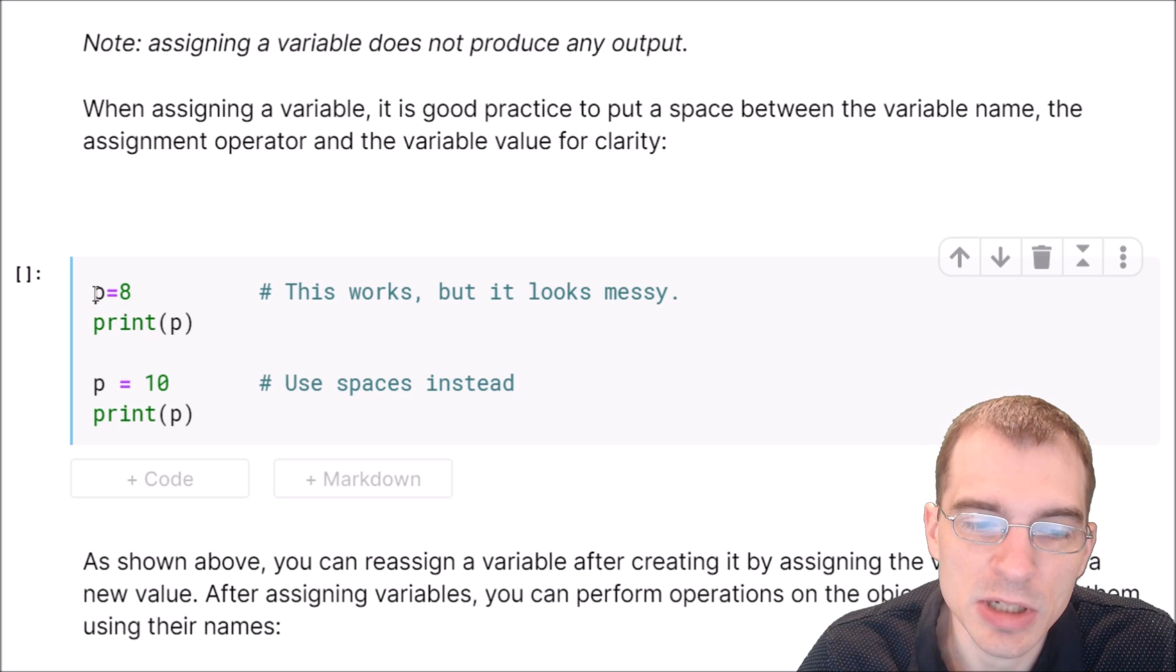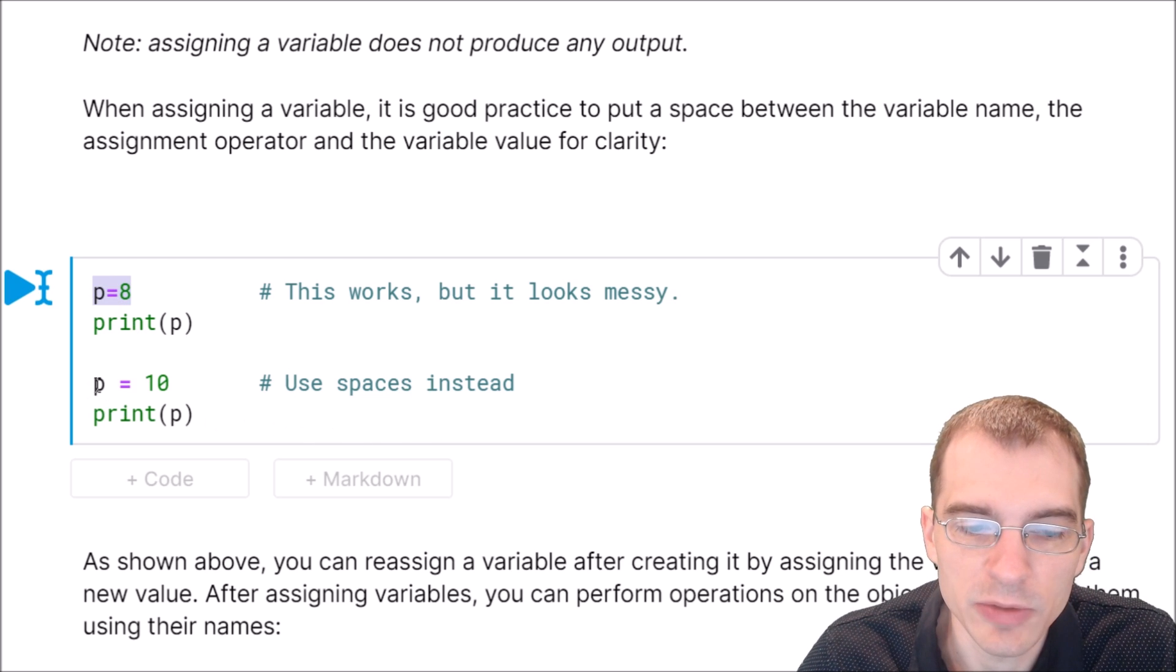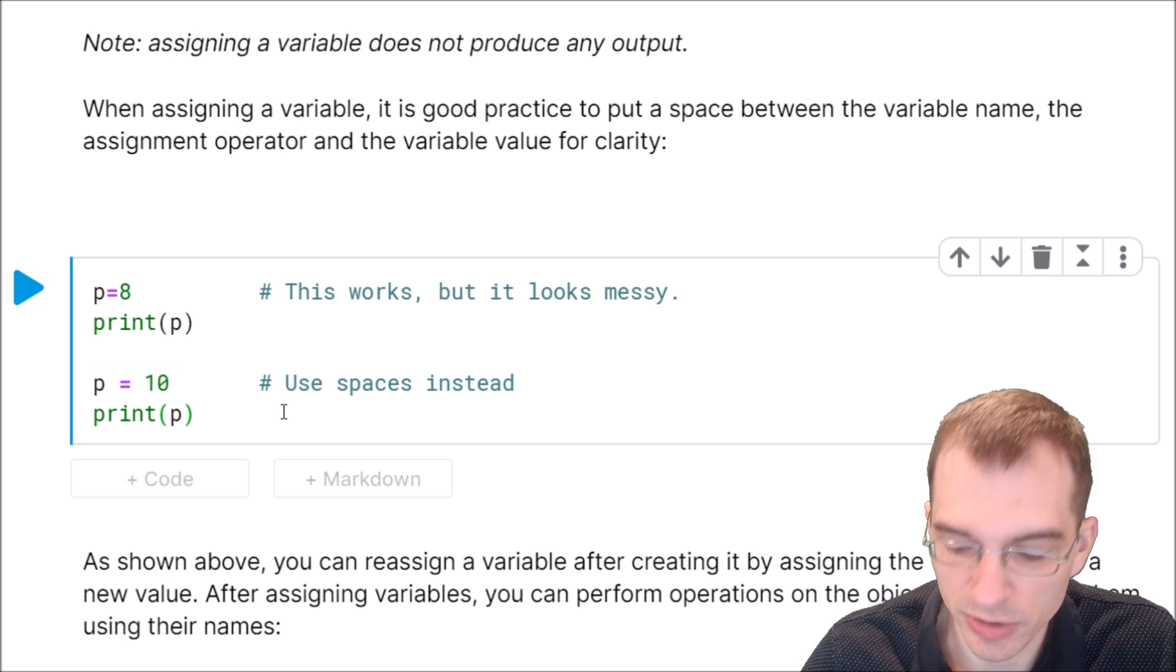You can see in this code cell we have p equals 8. That does work to assign the value 8 to the variable p, but this doesn't look very nice. It's kind of jumbled looking. If you do it like this with spaces on either side, it's just easier to tell what you're doing.